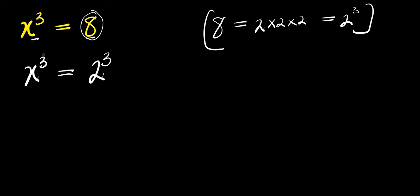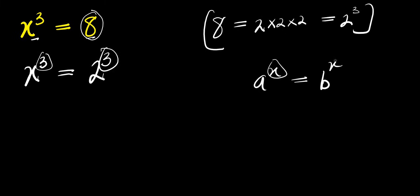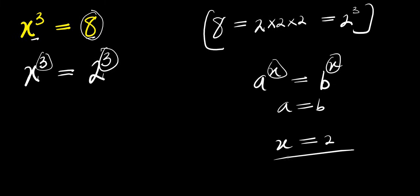We have x power 3 equals 2 power 3 because 8 equals 2 times 2 times 2, and that is 2 power 3. Now the exponents are the same, so if you have a power x equals a power x, since the exponents are the same you can say a equals b, so you can easily say that x equals 2. This is just one of the solutions because we have other solutions.